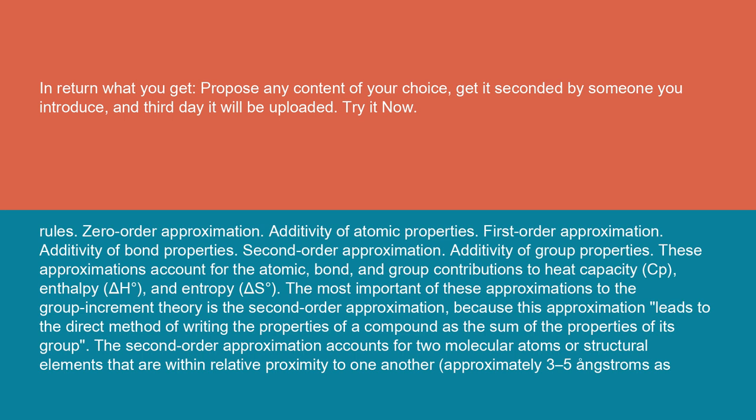These approximations account for the atomic, bond, and group contributions to heat capacity (CP), enthalpy (ΔH°), and entropy (ΔS°). The most important of these approximations to the group increment theory is the second-order approximation, because this approximation leads to the direct method of writing the properties of a compound as the sum of the properties of its groups. The second-order approximation accounts for two molecular atoms or structural elements that are within relative proximity to one another, approximately 3-5 angstroms.